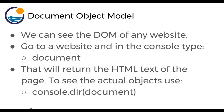We can see the DOM of any website. You can go to a website and in the console type document to see the actual document object model — that will return the HTML text of the page. To see the actual objects, you want to use console.dir and then pass in document.